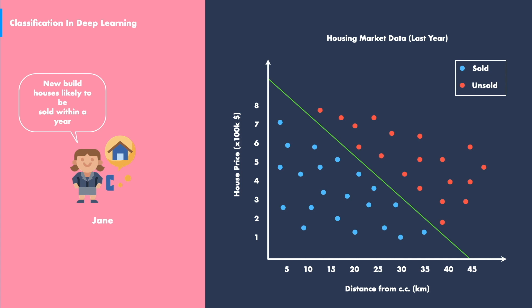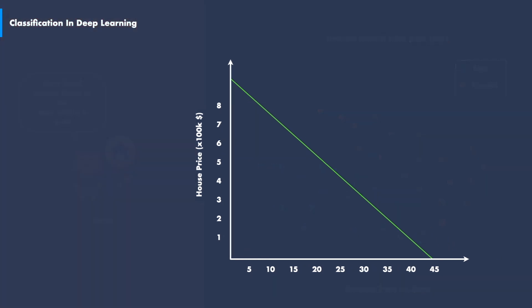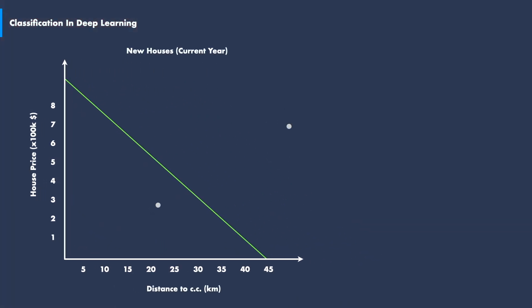At this stage, Jane observes that she is able to draw a straight line separating the two data clusters representing sold and unsold houses. Seeing that the data is split into two clusters, Jane concludes that data points below the line represent houses that are not likely to be sold within a year after they are built.